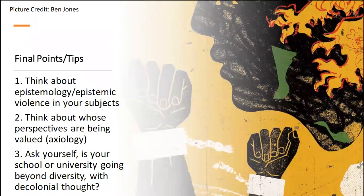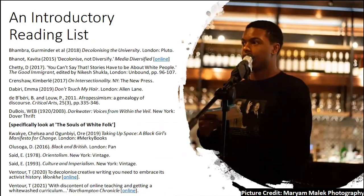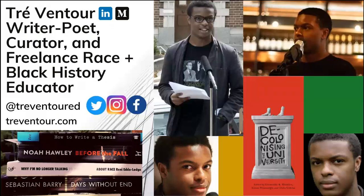I leave you now thinking about knowledge and knowledge-based violence — epistemology, epistemic violence, epistemicide. Look at your lesson plans. Can you make changes? Think about whose voice and whose points of view are being centred, and whose voices are being given more scope than others. Ask yourself if your school, college or university is conflating diversity with decolonial thought, and if they are, what can you do about it? Here is a brief reading list — there are many more texts on race, empire and decoloniality that you can find, but this is a good introduction. My name is Trey Vental, and thank you for listening.